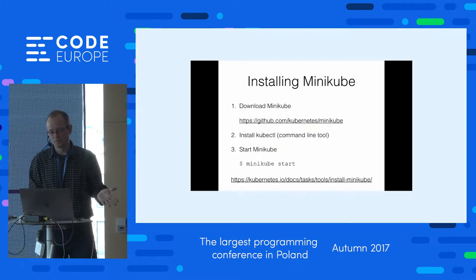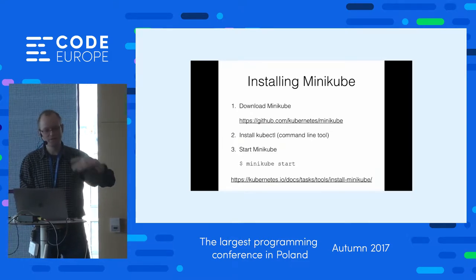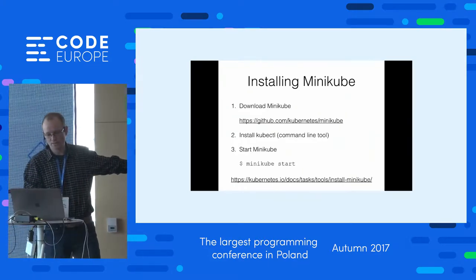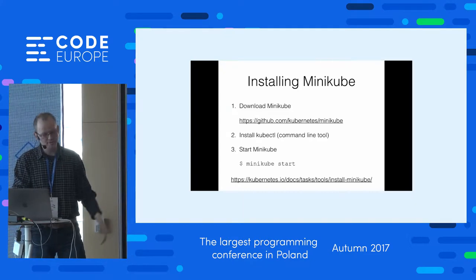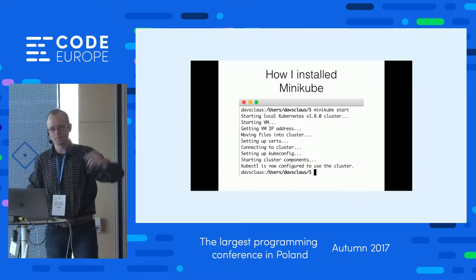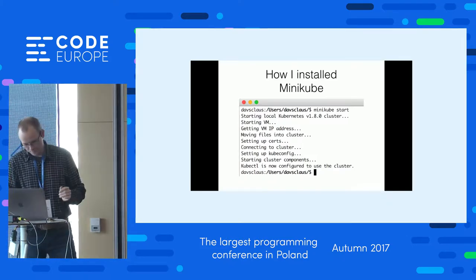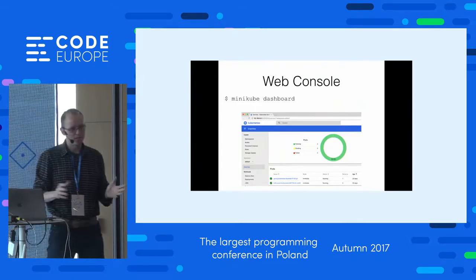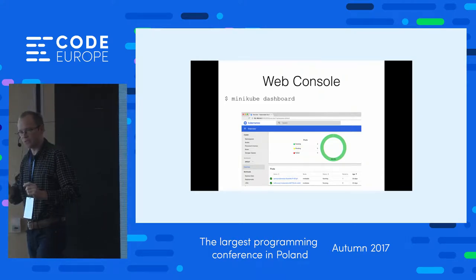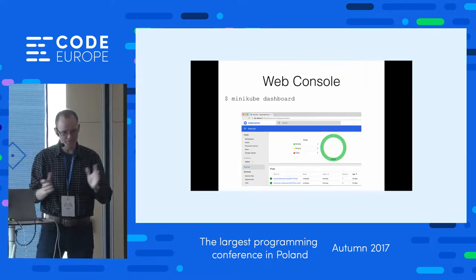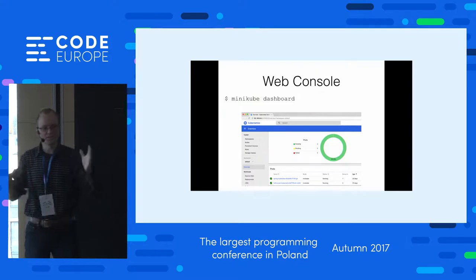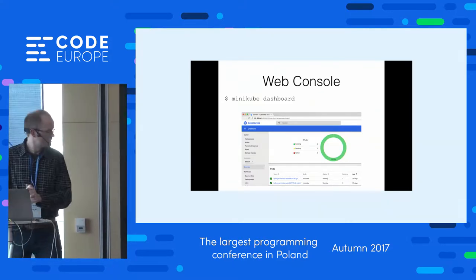To install Minikube, you go to the GitHub page for kubernetes/minikube, download it, and also download and install the client command line tool called kubectl. Then you can start Minikube. You just type "minikube start" and it outputs some information. Once Minikube is started, you can use "minikube help" for a list of commands, "minikube status" to check status, and "minikube dashboard" which gives you a link to open in a web browser so you can see a visual overview of what's going on.